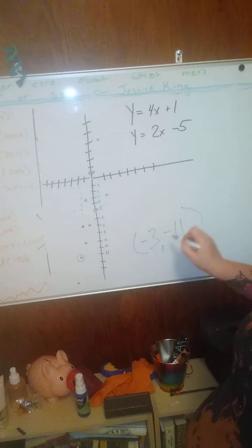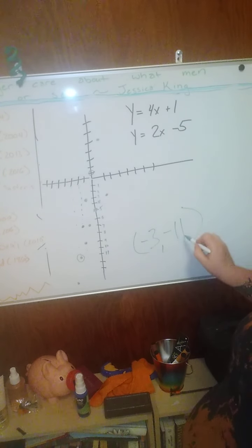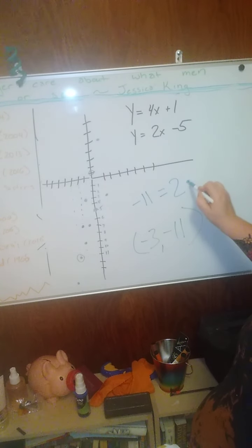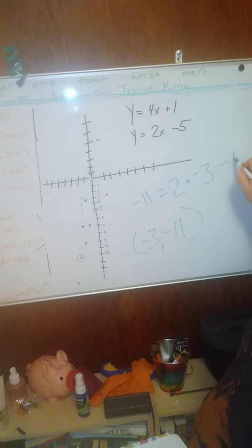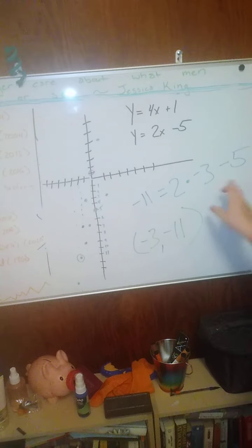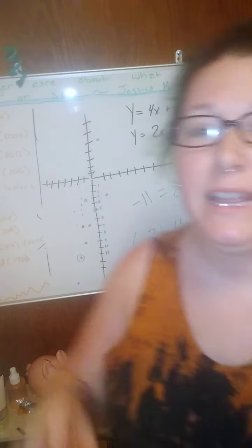You can plug those numbers back in. So like if y is equal to negative 11, which is equal to two times negative three minus five. And of course that works out because that would be a negative six plus a negative five, making your negative 11. And that is the correct answer for number 15. I hope this helps. I love you so much. Many more videos to come to help you out with other problems, but you got this. You know what you're doing.